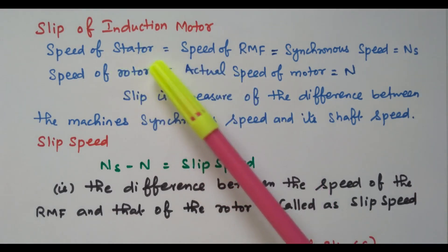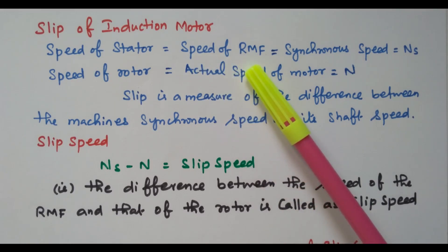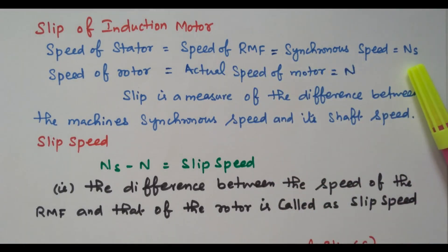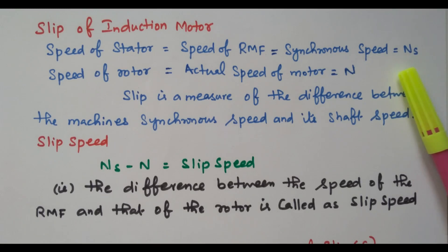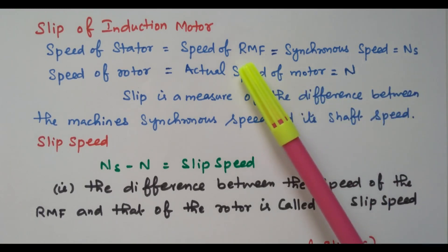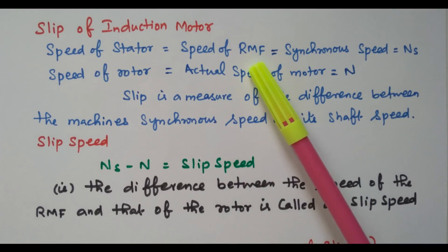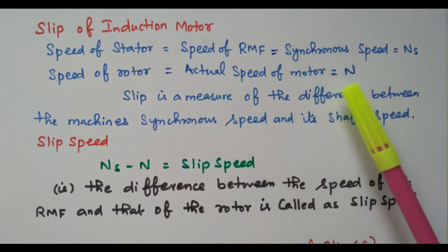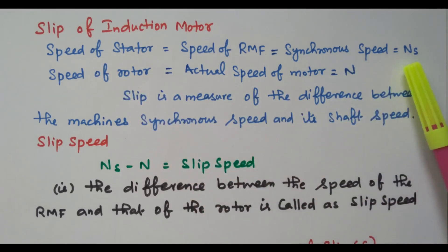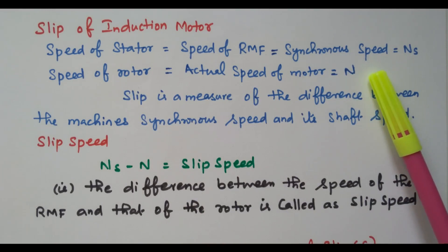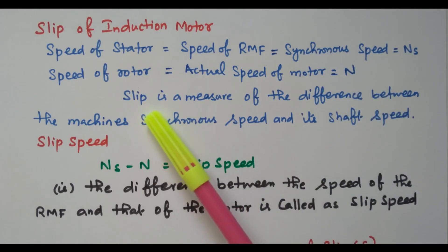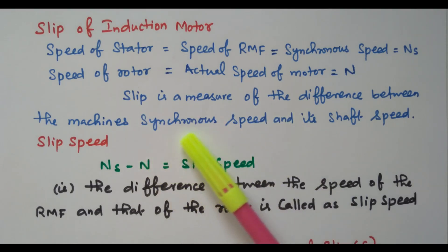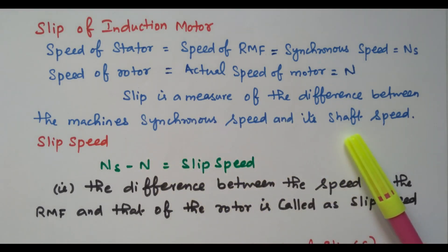The speed of the stator is nothing but the speed of the rotating magnetic field, or synchronous speed, equal to Ns. This Ns is the synchronous speed — the speed the motor is designed for, also called the speed of the rotating magnetic field. The actual speed of the rotor is N. The difference between Ns and N is the slip of the induction motor — it is a measure of difference between synchronous speed and shaft speed.